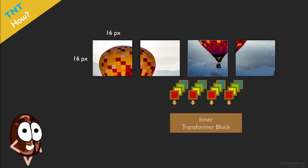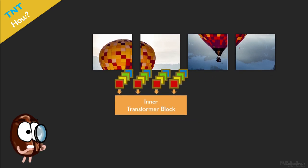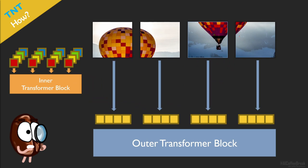So we have an inner transformer block that does self-attention transformer magic on the pixel level. Then we have an outer transformer block on image patch level, where the image patches are represented by a vector in the same way previous work did.